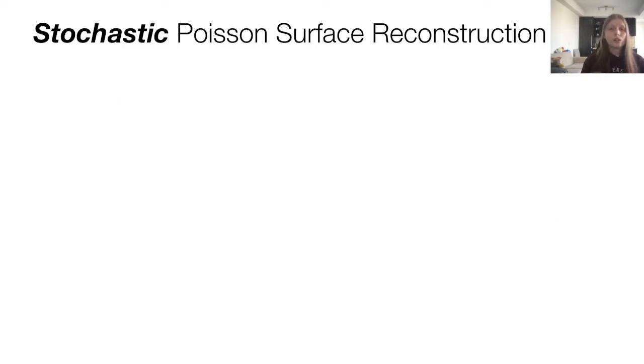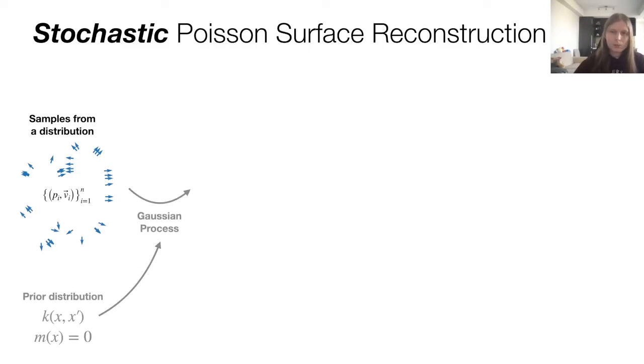We realize that the vector field described in Poisson's surface reconstruction can also be seen as the mean of a Gaussian process. This lets us introduce our generalization of Poisson reconstruction, which we call stochastic Poisson surface reconstruction, where the input point cloud is no longer just a bunch of vectors, it's a set of samples from a random distribution. The interpolation step isn't just an interpolation, it's a Gaussian process with a given prior that lets us recover the whole Gaussian distribution that describes this vector field.